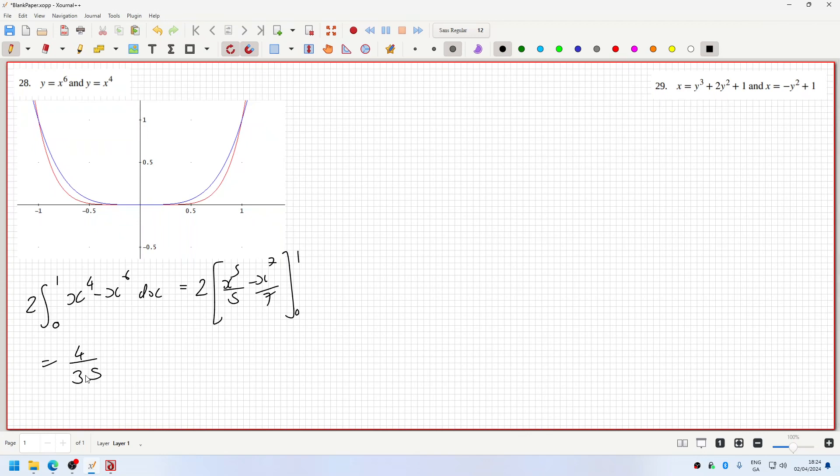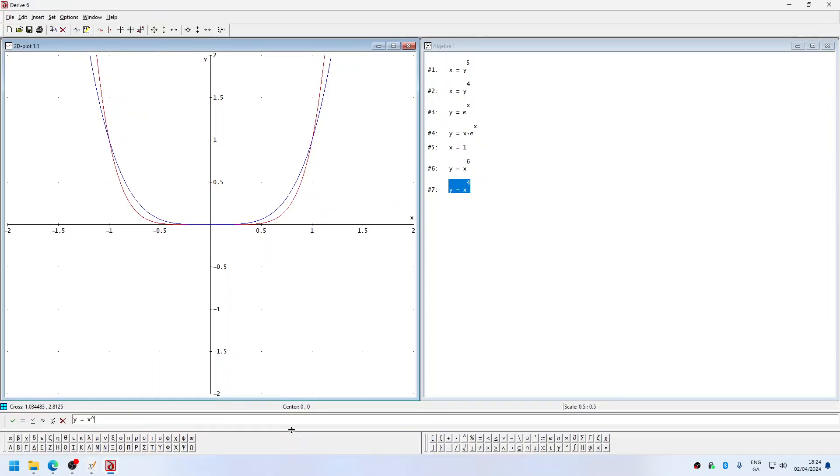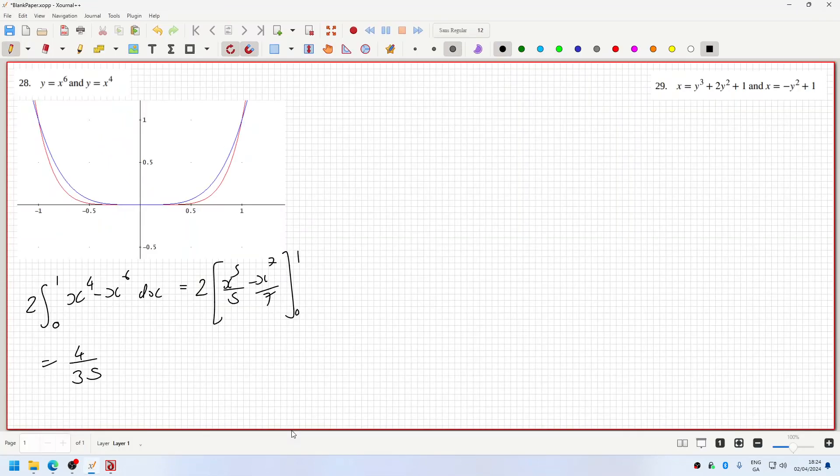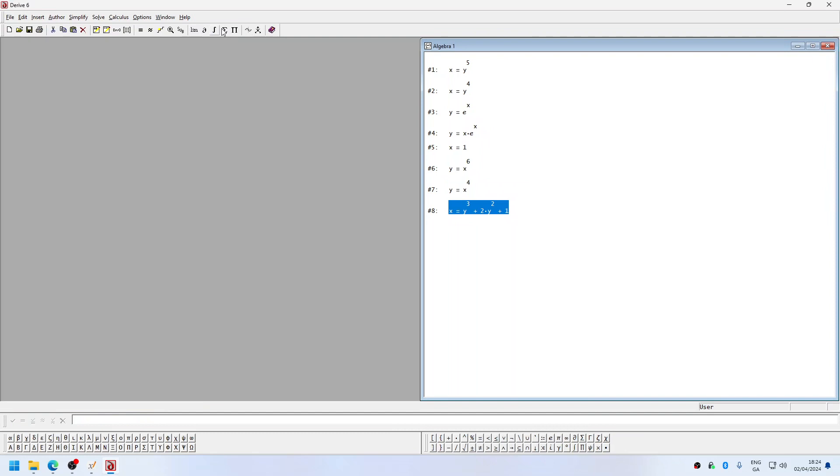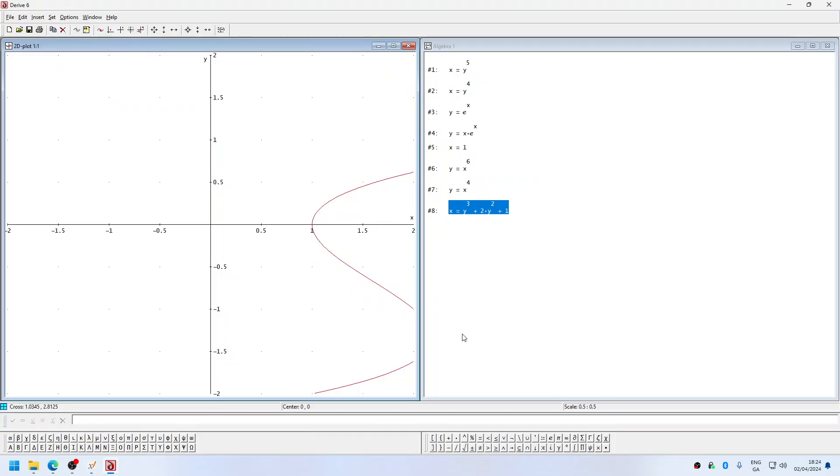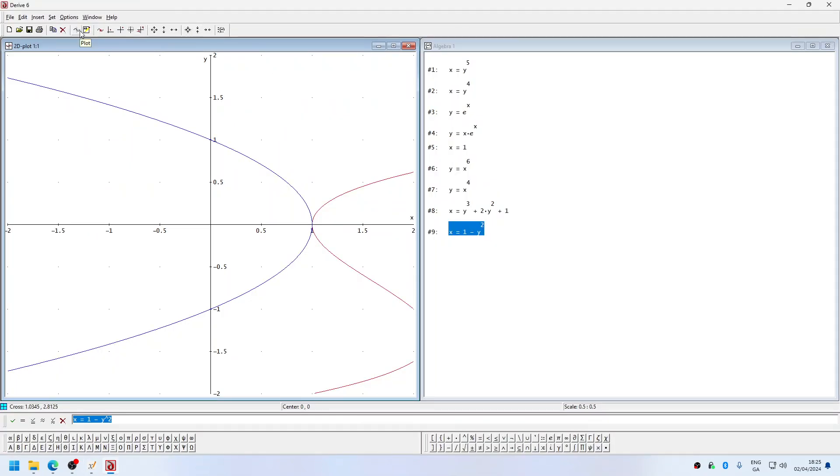Okay, now a little bit trickier is the next one. So let's draw that, x equals y cubed plus 2y squared plus 1, and x equals 1 minus y squared. Let's draw that. I need to zoom out.